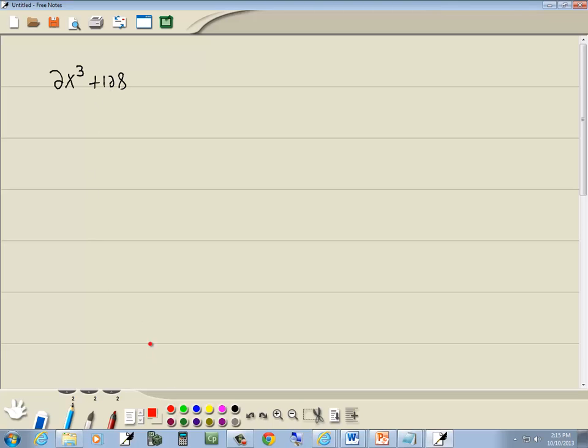Now always, our first method we should look for is GCF. These both have a 2 in common, so I can factor that out. And that gives us 2 times x³ plus 64.